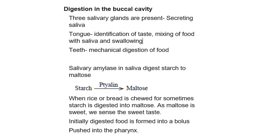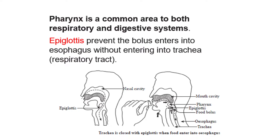Saliva contains salivary amylase, which is involved in partial digestion of starch into maltose. You can see the reaction shown here where starch is converted to maltose. With tongue movement, the food mixes with saliva and is formed into a bolus — a ball-like structure — which is then pushed into the pharynx by muscle movements.